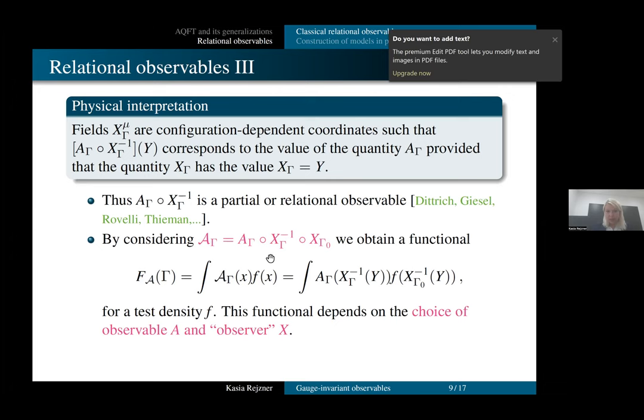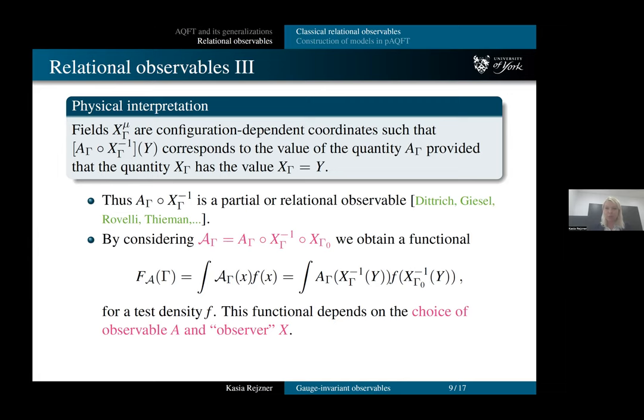And from these objects, from these diffeomorphism invariant observables, I can construct then functionals of the metric and the matter fields, which are given by integrating these invariant combinations with some test functions. So if you then do a bit of coordinate change, you can see here the other way of looking at this quantity is to evaluate your physical quantity you want to observe at the point given by your dynamical coordinate system. And then you evaluate the test function at the point given by the background value of your dynamical coordinate system.